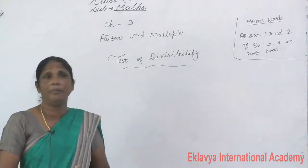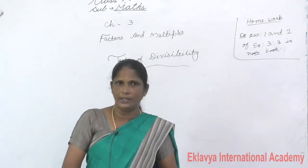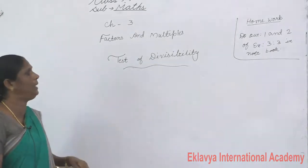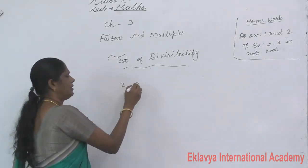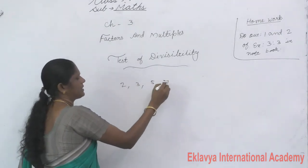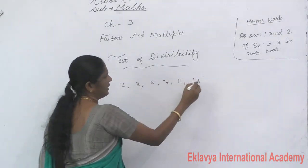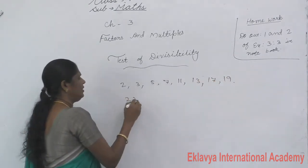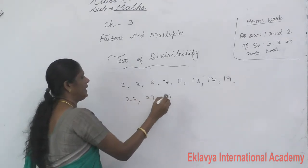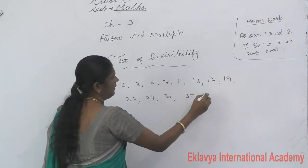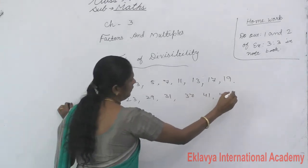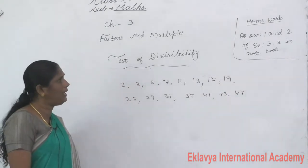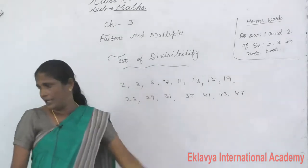What are prime numbers? A number which has only two factors — that is 1 and the number itself. The prime numbers up to 50 are: 2, 3, 5, 7, 11, 13, 17, 19, 23, 29, 31, 37, 41, 43, and 47. Now we study the test of divisibility.